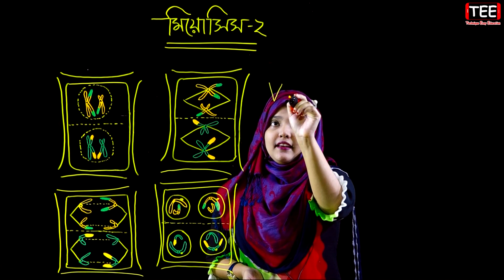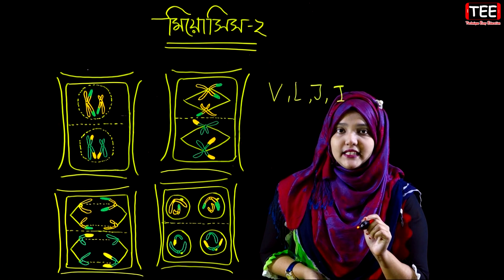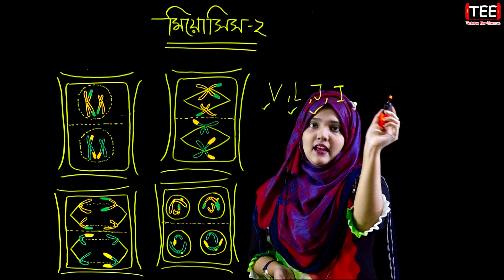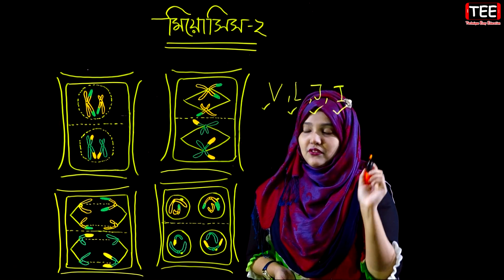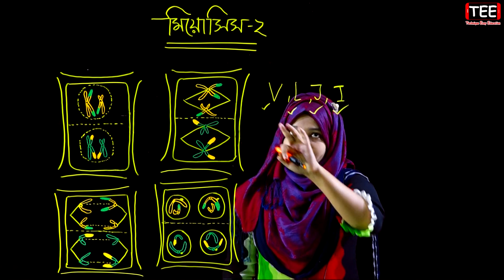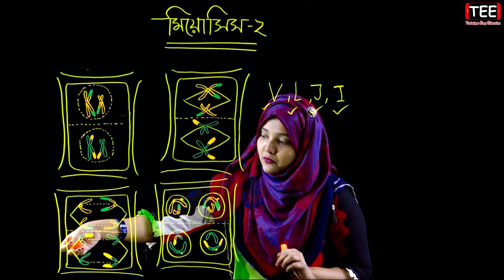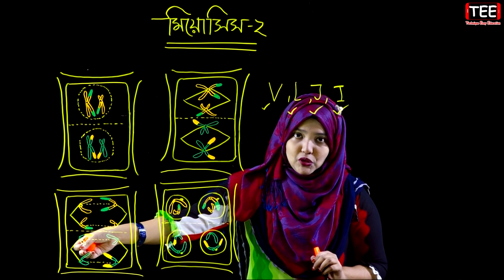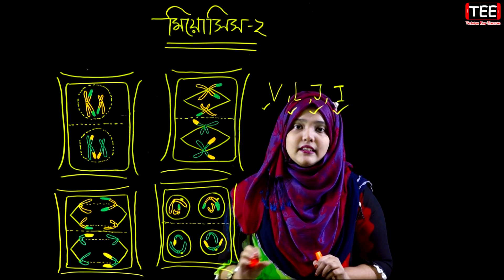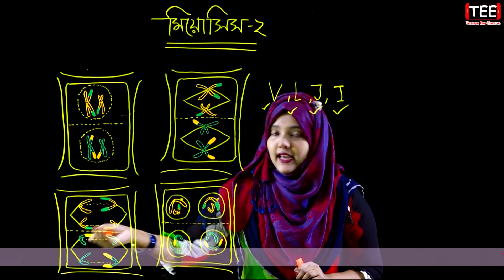Chromosomes can be classified as Metacentric, Sub-metacentric, Acrocentric, and Telecentric based on the position of the centromere. For example, we can divide chromosomes into these categories.